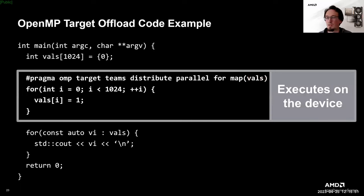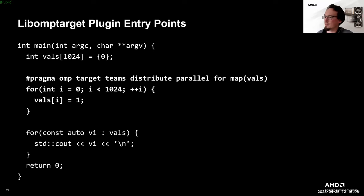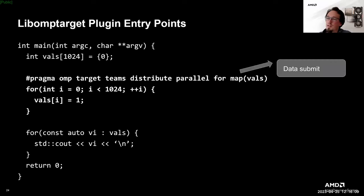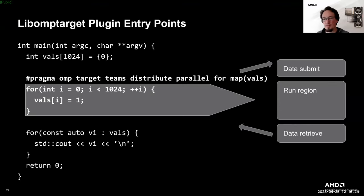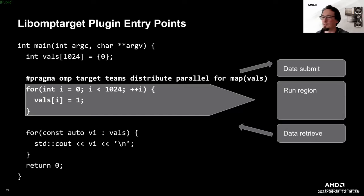Putting it together, we can think of this code as actually executing on device. In libomptarget, the code will hit the following markers: first, a data submit — copying the data to the device; followed by a run region — actually executing the kernel on the device; followed by a final data retrieve — copying the data back from the device. Inside the data submit, libomptarget also creates a mapping table to track which areas of memory are mapped to the device and which device pointers are assigned to a particular region. This list is reference counted, and should the reference count for a particular device storage go to zero, the device storage may be freed.